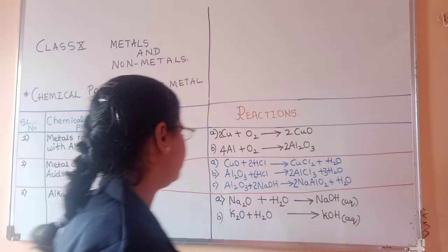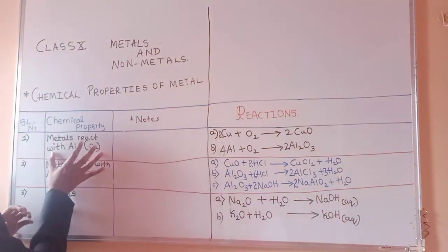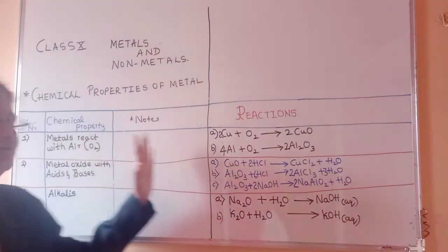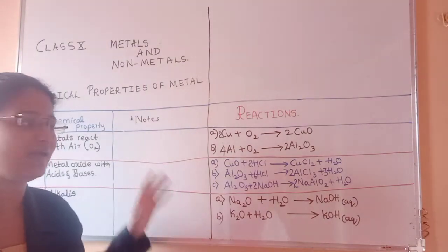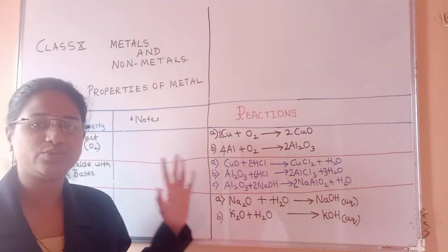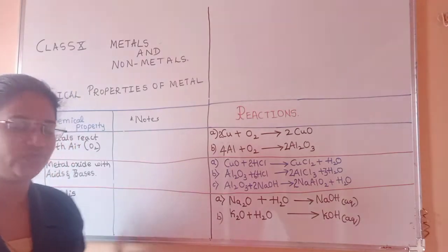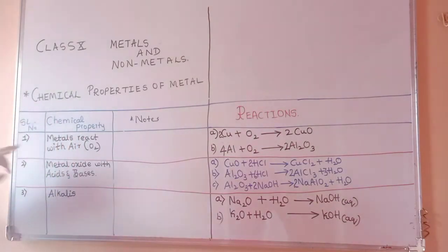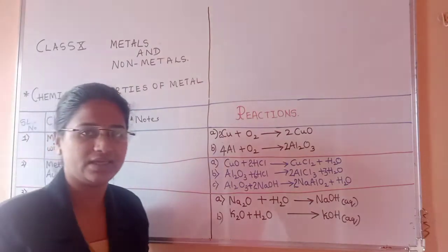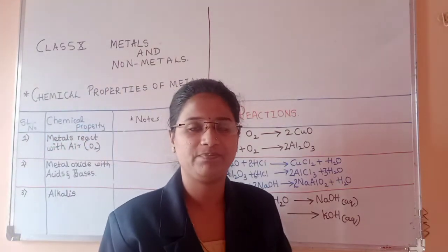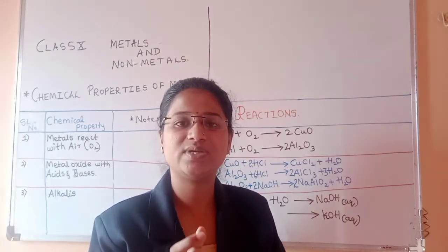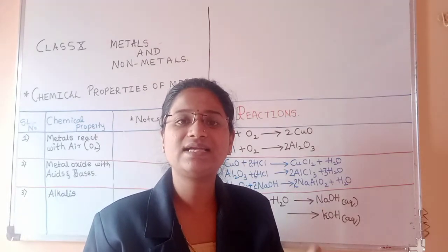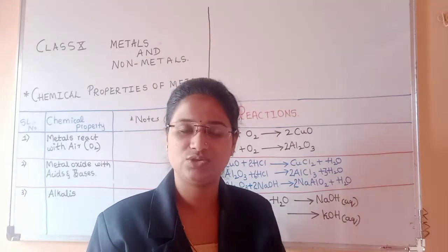I have drawn a tabular column so that it will be easy for you to understand and I won't need to rub the board often. The first one is: metals react with air. When metals react with air — or nothing but oxygen — they usually form their metal oxides. The product will be metal oxide and the reactants will be metal plus oxygen.